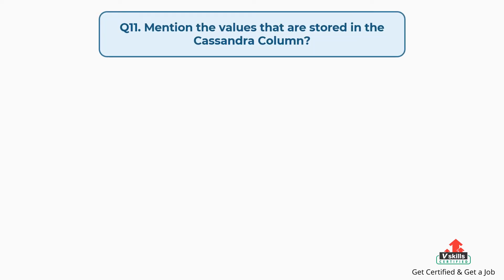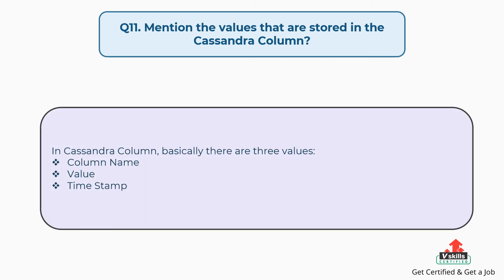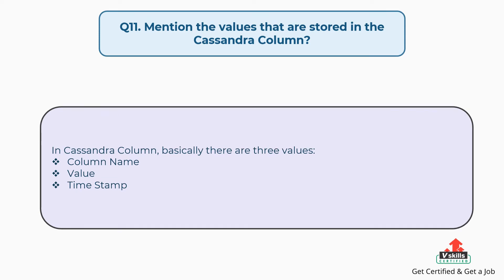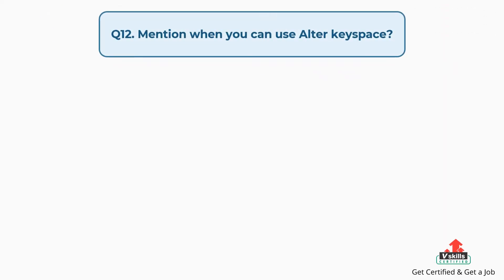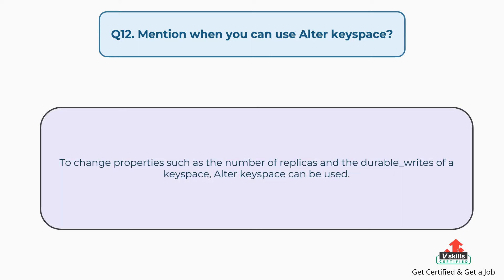Question number eleven: Mention the values that are stored in the Cassandra column. In a Cassandra column, there are basically three values: column name, value, and timestamp. Question number twelve: When can you use ALTER KEYSPACE? To change properties such as the number of replicas and the durable writes of a keyspace, ALTER KEYSPACE can be used.